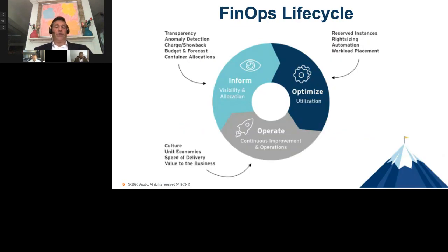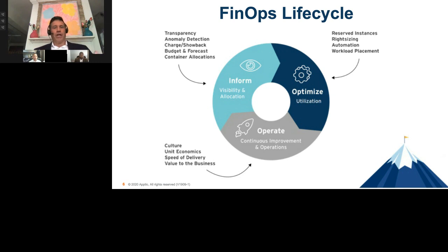There's actually a methodology and governing body called FinOps — financial operations — for the lifecycle approach to managing cloud. The focus is: how do I get informed about what's going on with my cloud bills? Once I have that visibility, how do I optimize, right-size, and automate to understand the best package to buy from my cloud provider so I'm not overpaying or getting hit with an unexpected bill? And ultimately, how do I operate this on a continuous basis? You want that real-time dashboard of your business so you can turn the knobs accordingly and manage cloud costs.